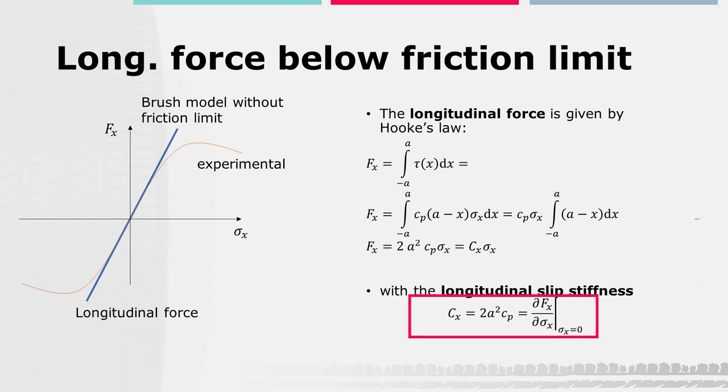This proportional factor is called the longitudinal slip stiffness Cx. It can also be described by the partial derivative of Fx by the longitudinal slip, evaluated at a longitudinal slip value of 0.